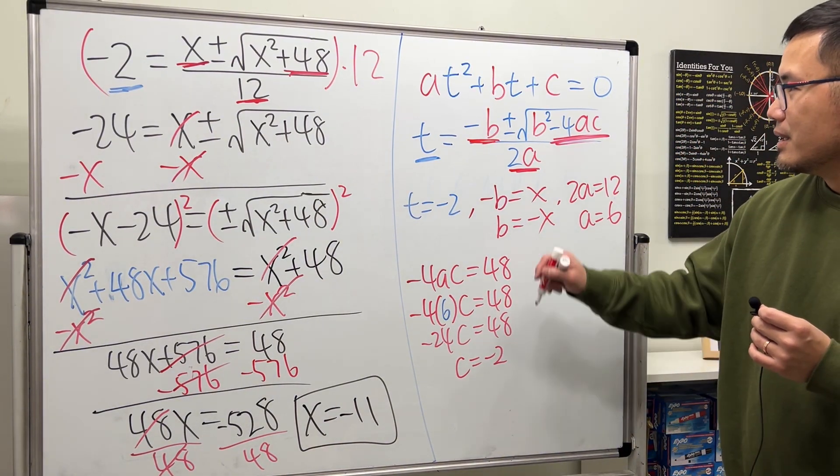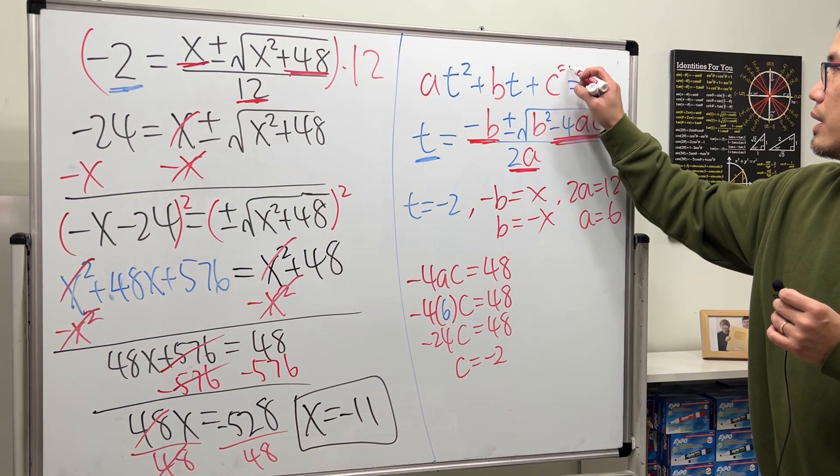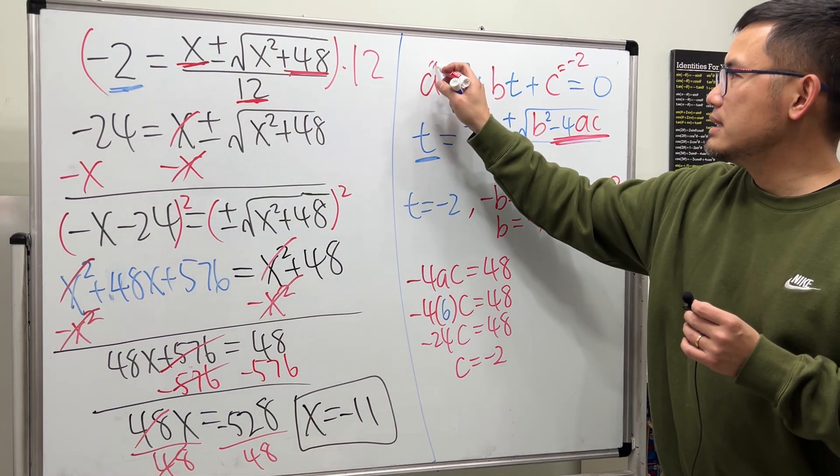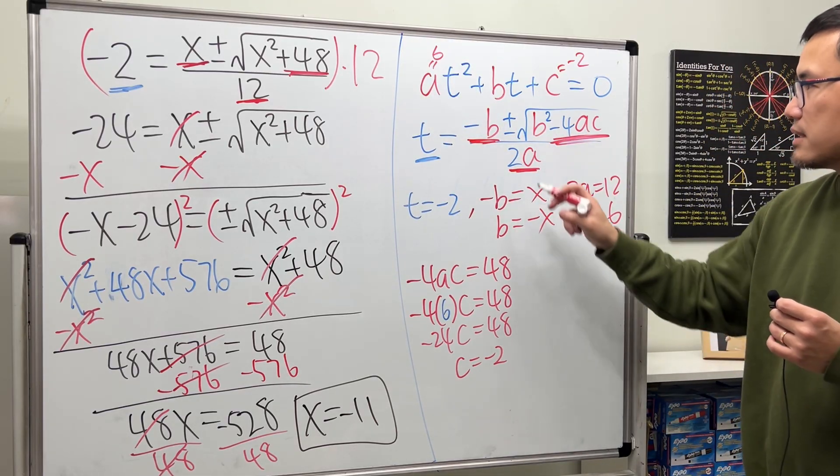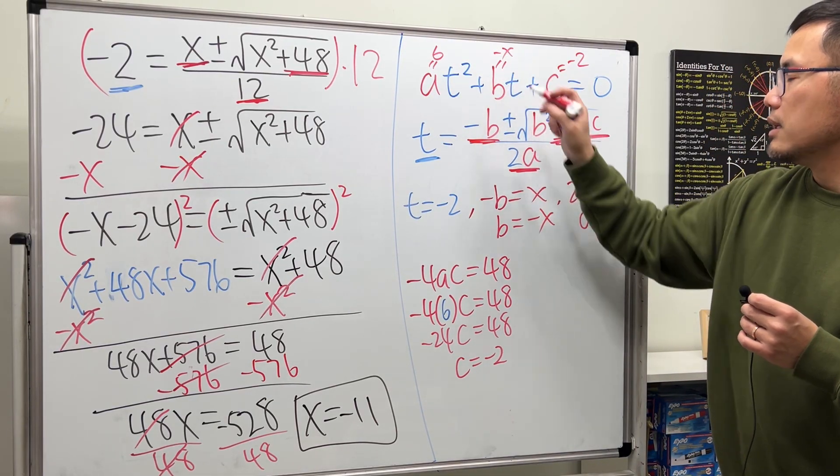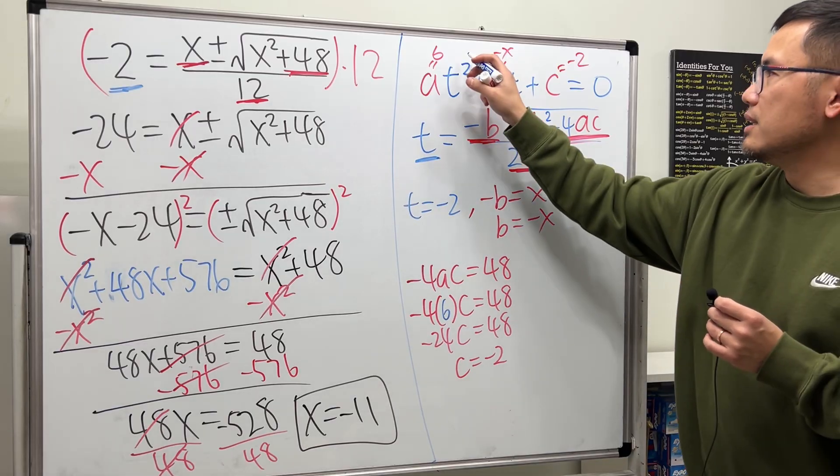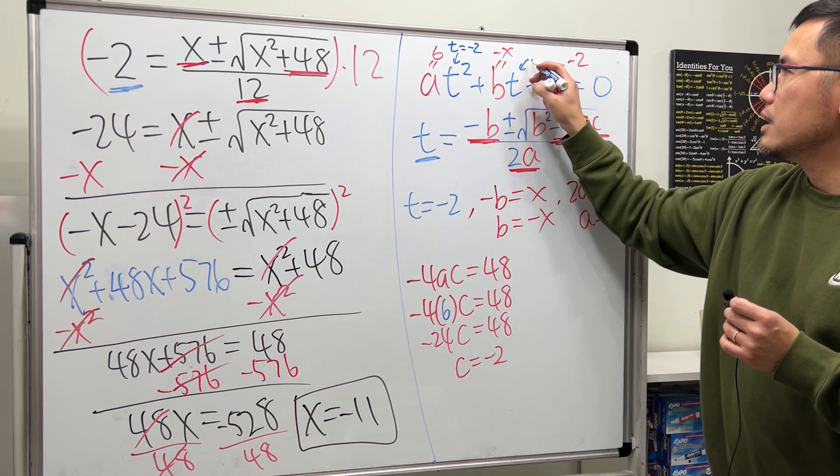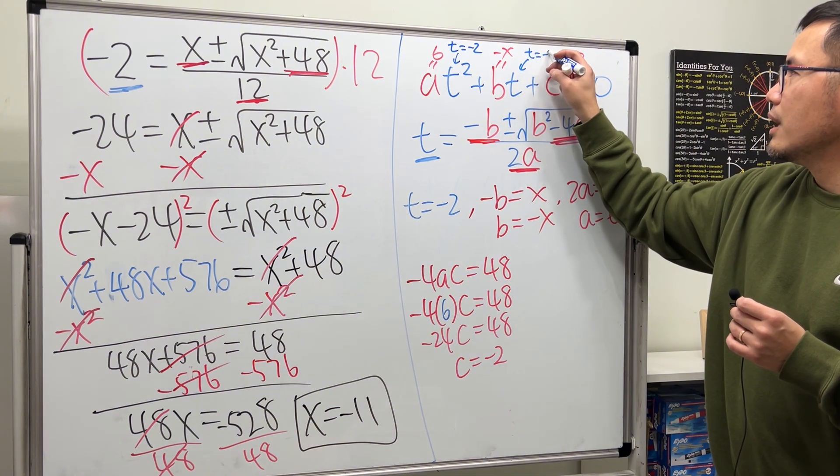So, have a look. c is equal to negative 2 and then a is 6 and then b is negative x. And then, t equals negative 2.